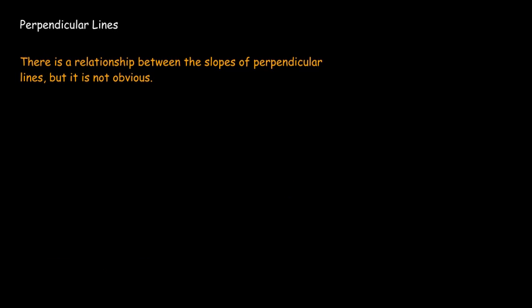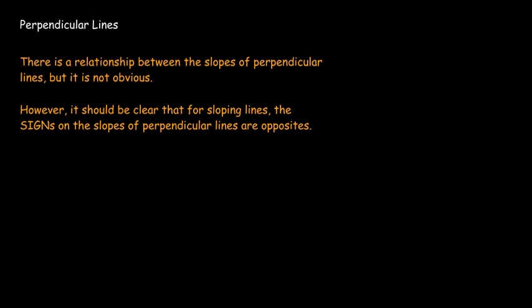Now for perpendicular lines, remember perpendicular lines mean that they meet at a right angle, a 90 degree angle. There is a connection between their slopes, but it's not as simple as being equal to each other like with parallel lines. One thing that should be clear is that by just looking at them, if you have two sloping lines and they're perpendicular to each other, one is going to have a positive slope and the other one is going to have a negative slope.